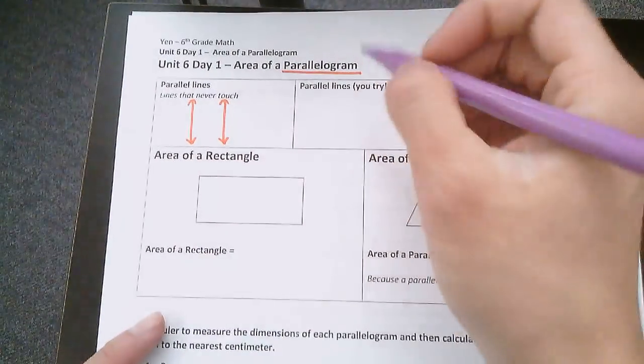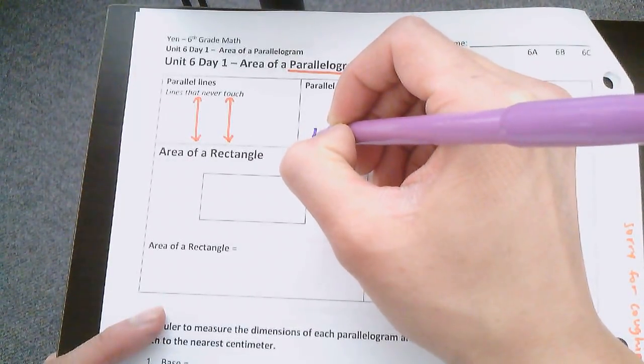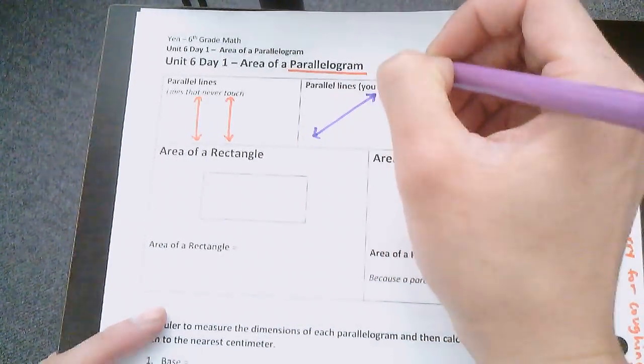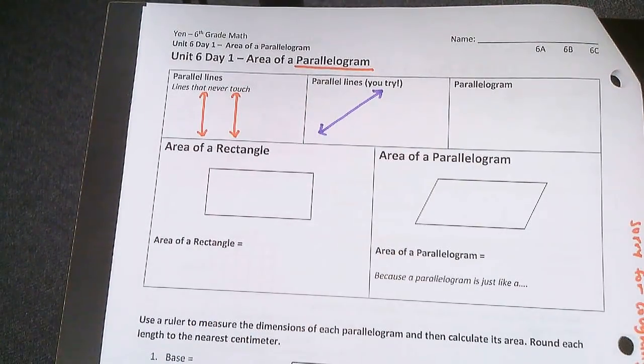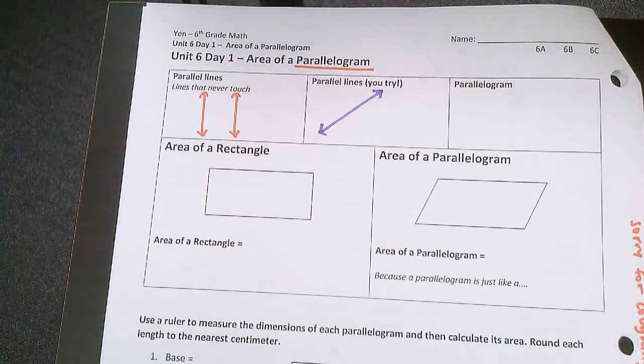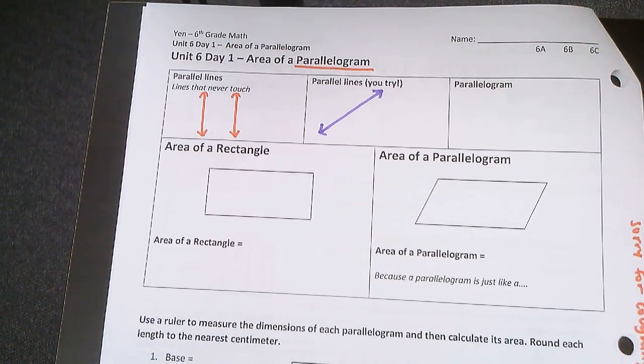Now you try. Draw a line that goes diagonally across like this. And I want you to draw a line that is parallel to that line. So draw another line that if you extend it forever it will never touch.